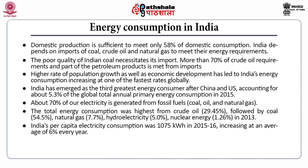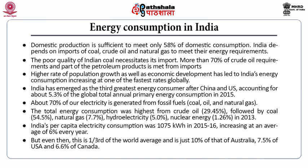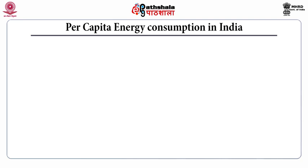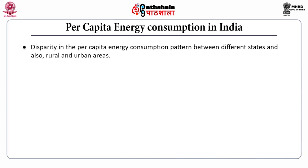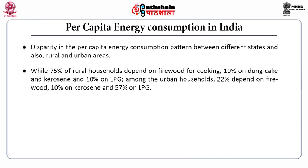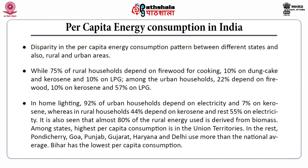India's per capita electricity consumption was 1075 kilowatt hour in 2015-16, increasing at an average of 6% every year. However, this is one third of the world average and just 10% of that of Australia, 7.5% of USA, and 6.6% of Canada. There is a disparity in per capita energy consumption between different states and between rural and urban areas. About 75% of rural households depend on firewood for cooking, 10% on dung cake and kerosene, and 10% on LPG. Among urban households, 22% depend on firewood, 10% on kerosene and 57% on LPG. In home lighting, 92% of urban households depend on electricity and 7% on kerosene, whereas in rural households 44% depend on kerosene and 55% on electricity.